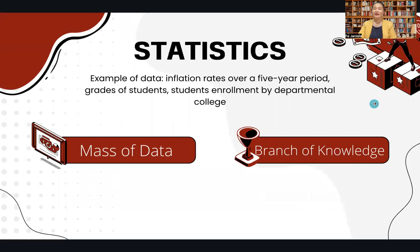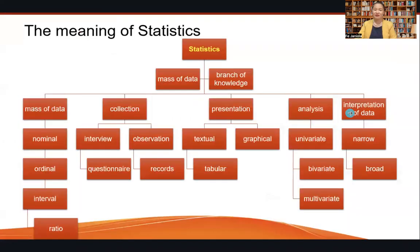We have here a mass of data and a branch of knowledge. Examples of data include the inflation rates over a five-year period of time, the grades of students in a class record, and the students' enrollment by departmental college. Here is the framework of the meaning of statistics — as a mass of data and a branch of knowledge that deals with the collection, presentation, analysis, and interpretation of data.